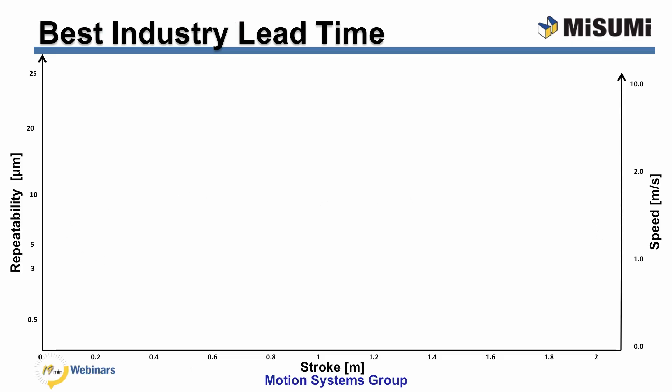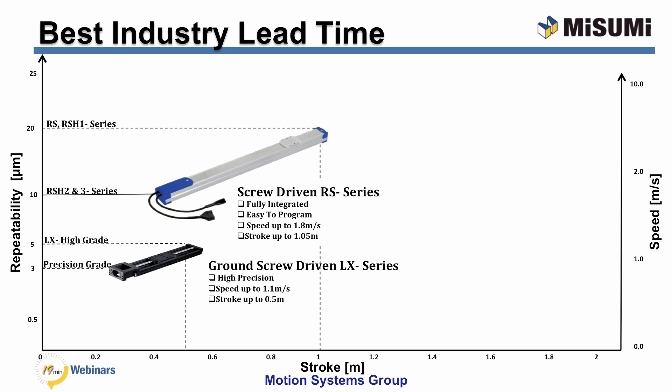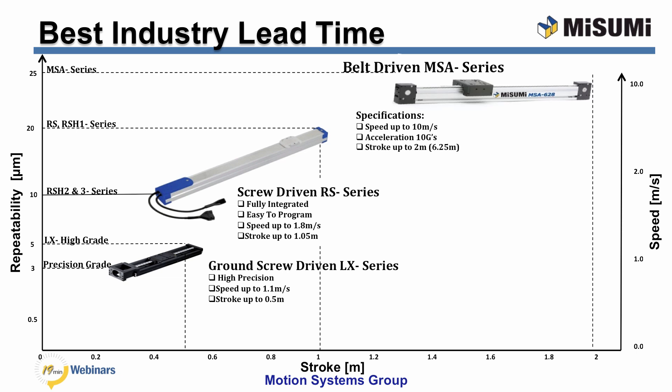Misumi's motion systems has a wide range of actuators. The LX Series actuator has a repeatability of 5 microns in its standard grade, or 3 microns in our high precision grade. It comes with a maximum stroke of about 1 meter and can do up to 1,100 millimeters per second. The RS Series has a repeatability between 10 and 20 microns, a maximum stroke of just over a meter, and top speeds of 1,800 millimeters per second. The MSA Series are our belt drive actuators, capable of 25-micron repeatability, speeds up to 10,000 millimeters per second, and standard strokes up to six and a quarter meters. Longer units can be made but are considered custom.